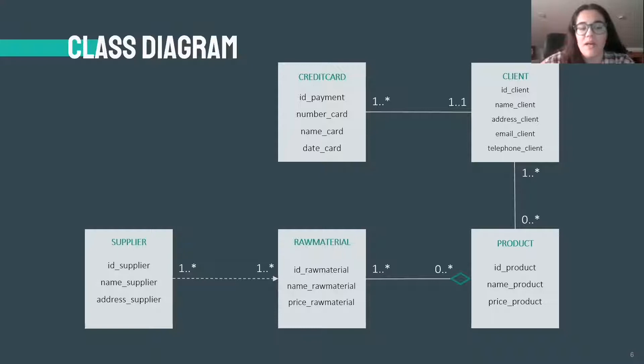For example, one credit card needs to have one owner, the client, as a minimum because its existence requires its belonging to someone and as a maximum the credit card can only belong to one person.